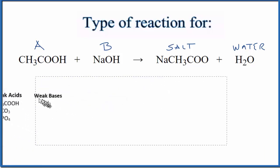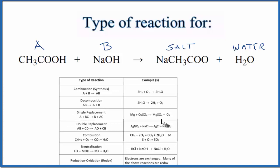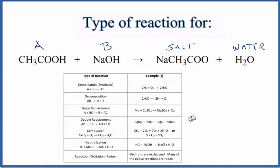We can also look at this table of common types of reactions. We know we have our neutralization. It's also a double replacement reaction. That's because the Na and the hydrogen trade places.